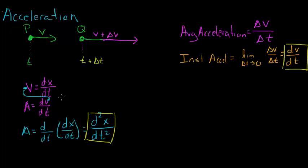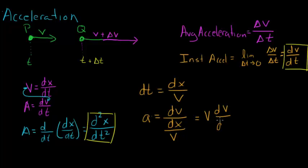Now, we can obtain one more expression if we solve this equation right here for dt, so dt is equal to dx over V, and we plug dt into this expression for acceleration. We get acceleration is equal to dV over dx over V, and if we simplify this we get the acceleration is equal to V dV over dx.